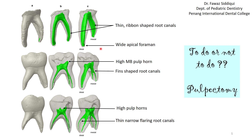We also have wide apical foramina in primary molars because as soon as primary molars erupt, resorption starts to happen in the periapical area. Sometimes you may have apical constriction and sometimes you may not. If you do not have apical constriction, you must be very careful — your files may pass the apical foramen and cause injury to periapical tissues. The recommendation is to keep your working length two to three millimeters short of the radiographic apex to avoid traumatizing the periapical tissue.